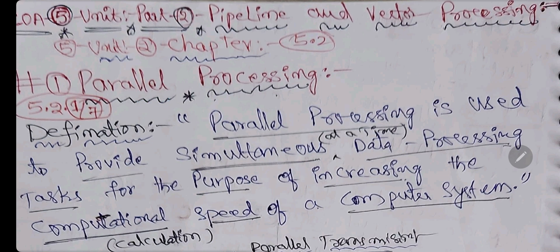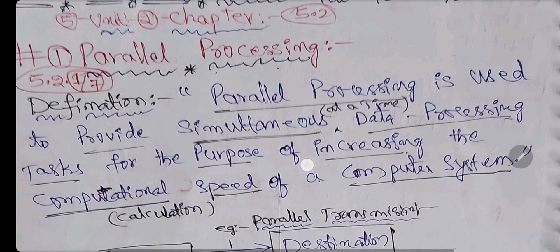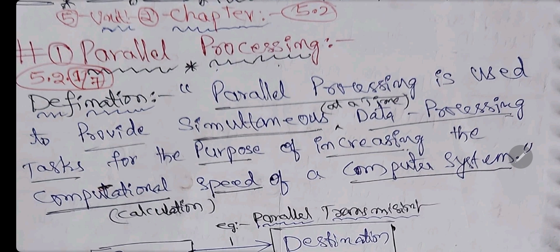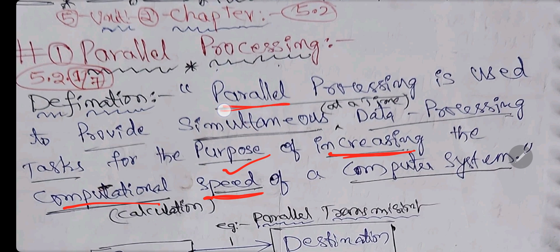For the short answer question, simply write the definition and a small diagram. The definition is very simple: parallel processing is used to provide simultaneous data processing tasks for the purpose of increasing computational speed - including logical operations, addition, subtraction, multiplication - all calculation speed of the computer will increase. Parallel processing is used to increase the speed of data transmission.